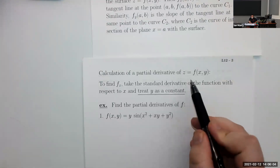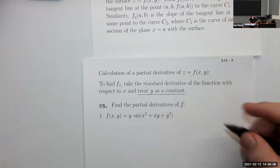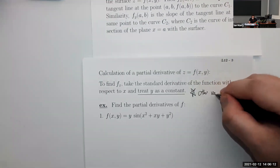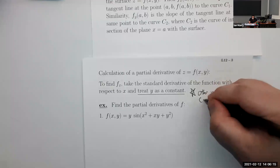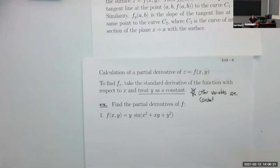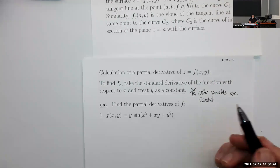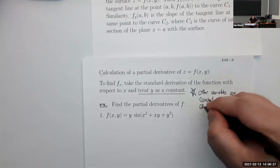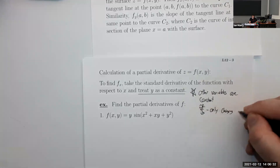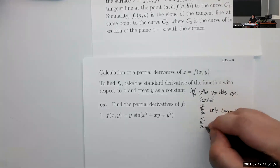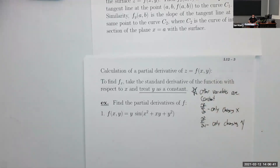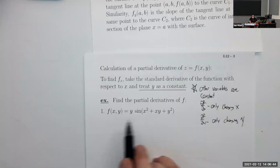Let's actually try computing partial derivatives. The key idea is that the other variables are constant. When we're doing a partial derivative, we only change the variable we're differentiating with respect to. For partial f partial x, we're only changing x. And for partial f partial y, we're only changing y. Let's apply this philosophy and do some partial derivatives.